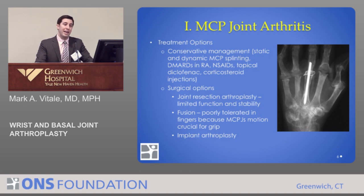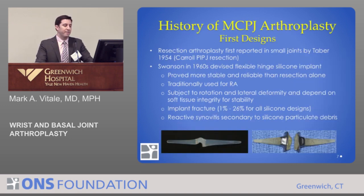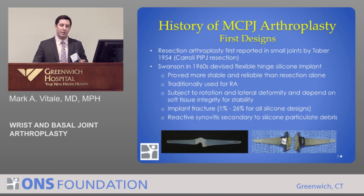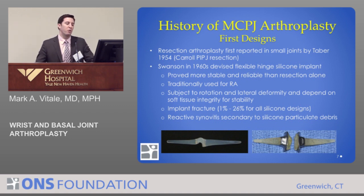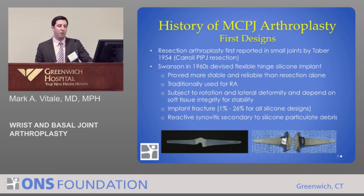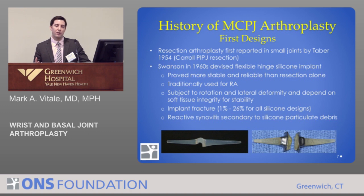Implant arthroplasty has been tried with some success. The first designs were done by Dr. Swanson in the 1960s — basically a silicone spacer that takes the place of the MCP joint. It's flexible, so it allows some motion while removing the arthritic joint and providing some stability. This was traditionally used in rheumatoid arthritis. However, the drawbacks are that it's subject to rotation and lateral deformity, and it depends on integrity of the soft tissue envelope. All silicone implants can develop a reactive synovitis that can lead to problems in adjacent soft tissues.